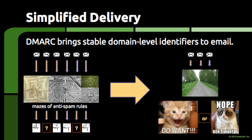DMARC's method of making email easy to identify has given rise to a second, and arguably larger, use case — that of simplifying email delivery. The problem that email senders face, especially senders that have built businesses on top of the requirement for reliable and timely delivery of email, is that email has historically never been easy to identify in a reliable manner.